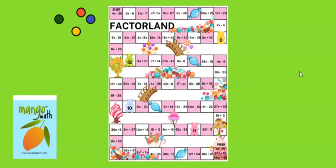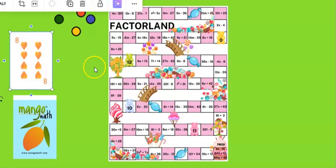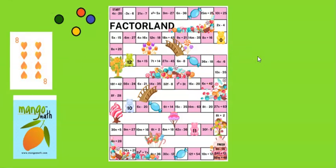Factor Land is a game in which students will be finding the greatest common factor in an expression. To figure out the factor that's in the expression, they will draw a card and that is the factor that they need to find as the greatest common factor in the expression.